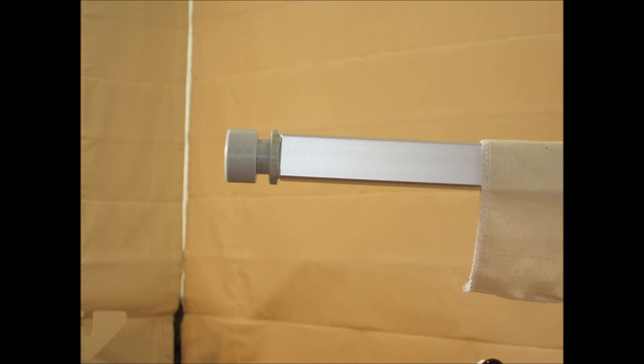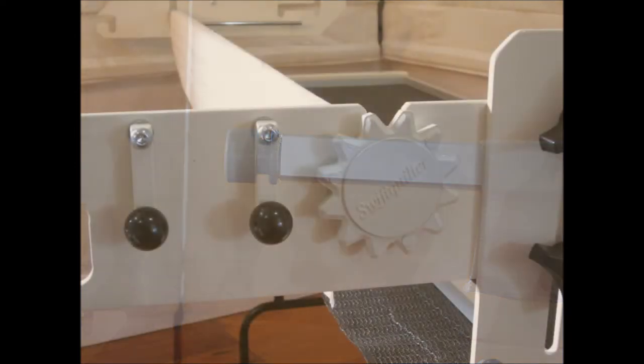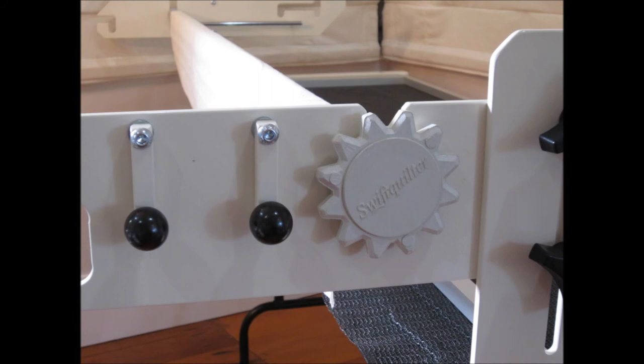Now we can put the quilt bars on. First, put the ends on the bars with the ratchets being on the left hand side. Take a good look at these photos and the manual to check that you've got the quilt bars rotating the correct way.